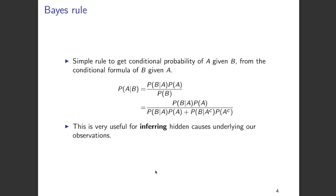Probability of A given B is probability of A intersection B divided by the probability of B. Now, probability of A intersection B can be written as probability of B given A times probability of A. Therefore, probability of A given B can be written as probability of B given A times probability of A divided by the probability of B.